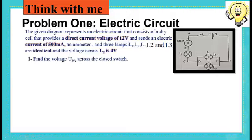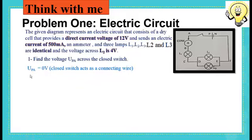Starting with the first question: find the voltage across the closed switch. UPA is 0 volts because the closed switch acts as a connecting wire.